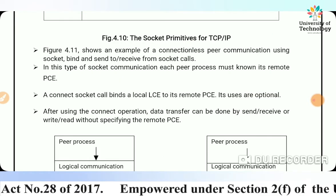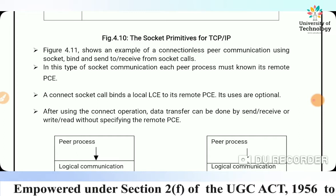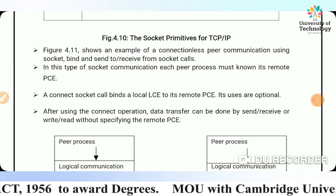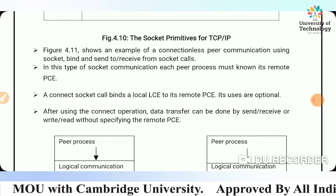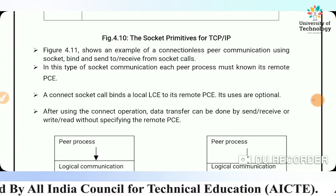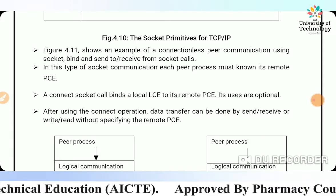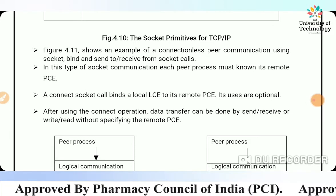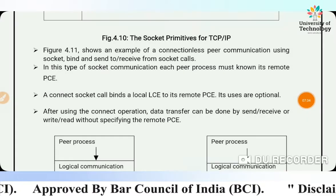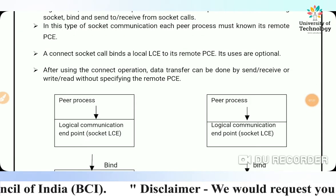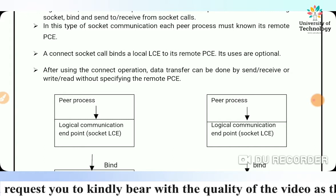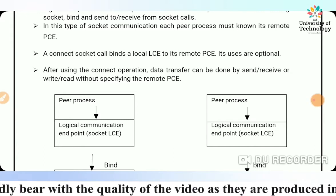An example of connectionless peer communication uses socket, bind, sendto, and recvfrom socket calls. In this type of socket communication, each peer process must know its remote PCE. A connect socket call binds a local LCE to its remote PCE, and its use is optional. After using the connect operation, data transfer can be done by send/receive or read/write without specifying the remote PCE.